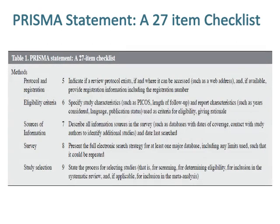Item 5 in methods regarding protocol and registration is to indicate if a review protocol exists, if and where it can be accessed such as a web address, and if available, provide registration information including the registration number. Item 6 regarding eligibility criteria is to specify study characteristics such as PECO's, length of follow-up, and report characteristics such as years considered, language, and publication status used as criteria for eligibility, giving rationale.